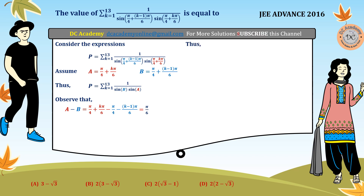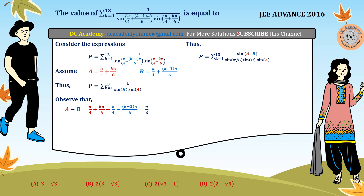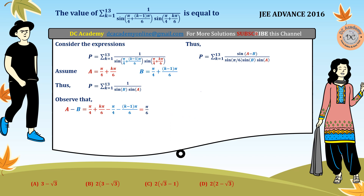Therefore we rewrite P by multiplying the numerator and denominator by sin(π/6). We observe that sin(π/6) in the numerator and sin(A−B) are actually equal, because A−B = π/6, so sin(A−B) = sin(π/6). That is a very obvious statement. So we can rewrite the summation in this particular form.